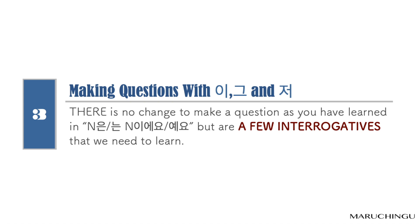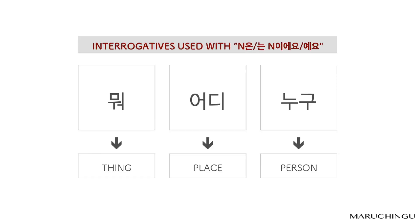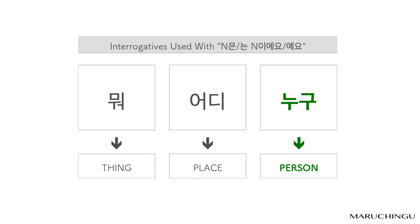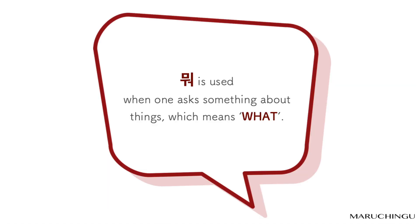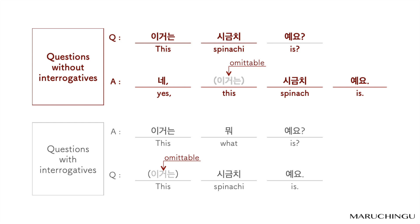Making questions with 이, 그, and 저. There is no change needed to form a question as you learned with 은/는 이에요/예요. There are a few interrogatives to learn. 뭐 is used when one asks about things, which means 'what.' Questions without interrogatives: 이거는 시금치예요?